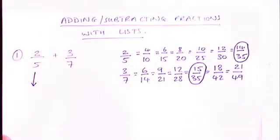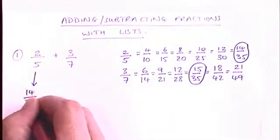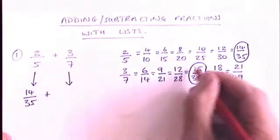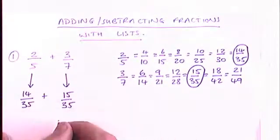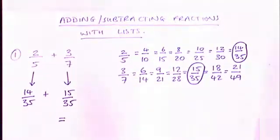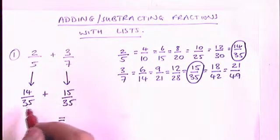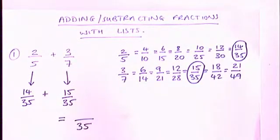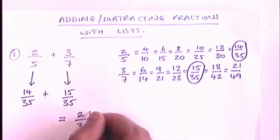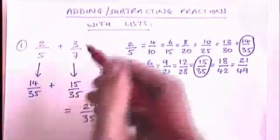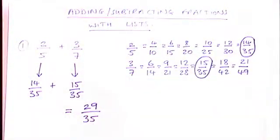So I'm going to write down, instead of two-fifths, I'm going to use this version of two-fifths, which is fourteen out of thirty-five. And instead of three-sevenths, I'm going to use this version of three-sevenths, which is fifteen over thirty-five. And now I can add those together because they're out of the same number. The denominator is the same. So we're looking at this. We're counting in thirty-fifths. And how many have we got? We've got fourteen here and we've got fifteen here. That's twenty-nine in total. So the answer to this original question, two-fifths plus three-sevenths, is twenty-nine out of thirty-five.